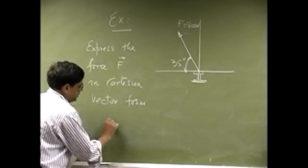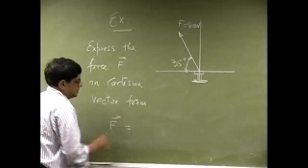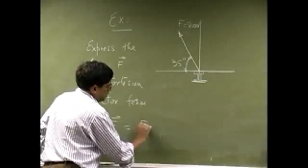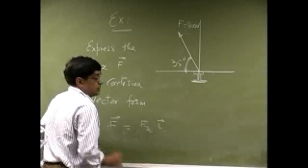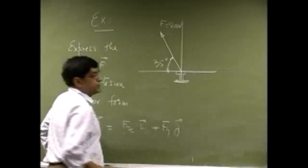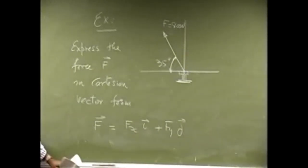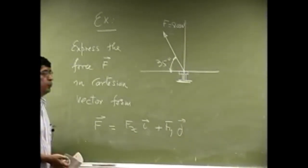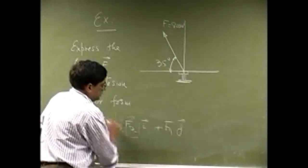What we are saying is that we want to write this force as FX i plus FY j and that is the form which is the Cartesian vector form.